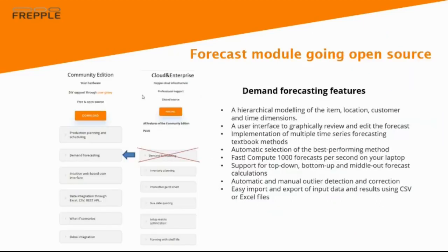The next topic is the open source mode for the forecasting module. So far, we have the community edition which is open source, and we have the cloud and enterprise editions which are paying versions of the software. The forecasting module has always been in the paying versions. What is now changing is that this module is going open source and is completely freely available in the community edition. On the right-hand side, you see here a detailed list of all the features this module provides so that you have an idea of what's behind it.